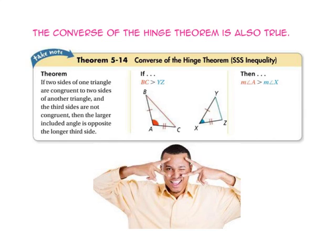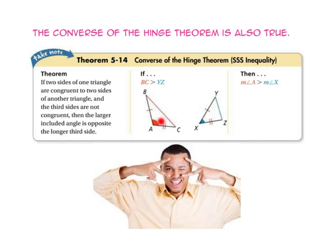The converse of the hinge theorem is also true. If two sides of one triangle are congruent to two sides of another triangle and the third sides are not congruent, then the larger included angle is opposite the longer third side. So, since the length of side BA is equal to the length of side YX and the length of side AC is equal to the length of side XZ, then since the length of side BC is greater than the length of side YZ, the measure of angle A is greater than the measure of angle X.